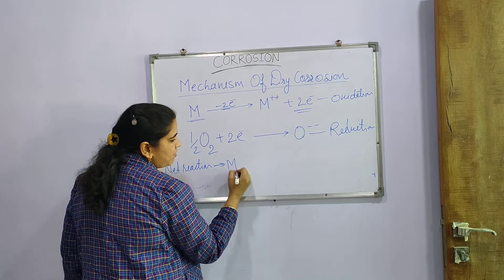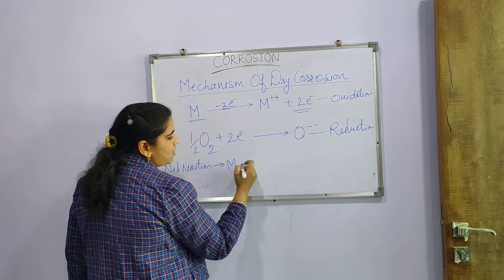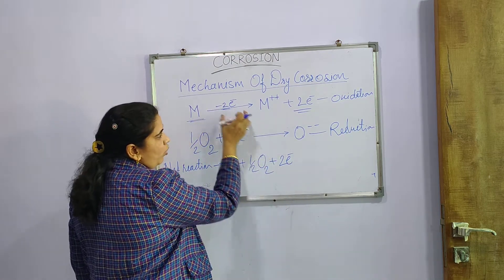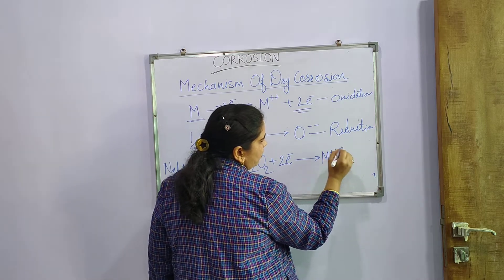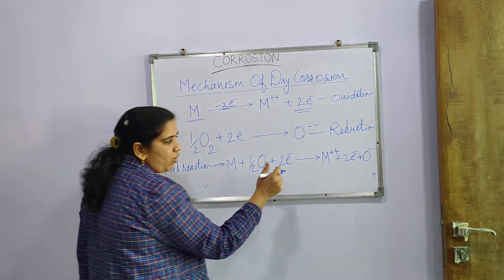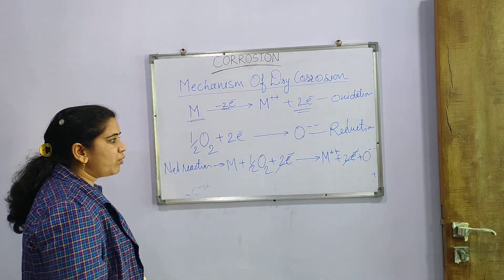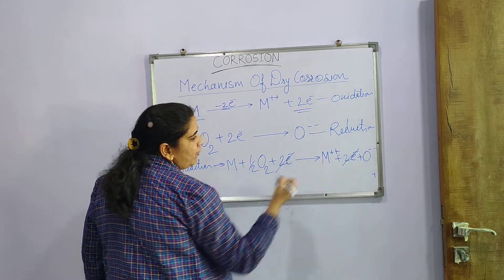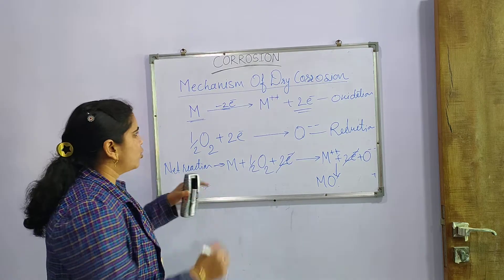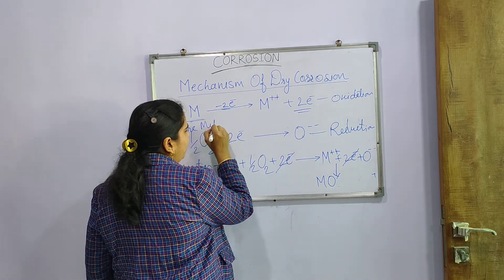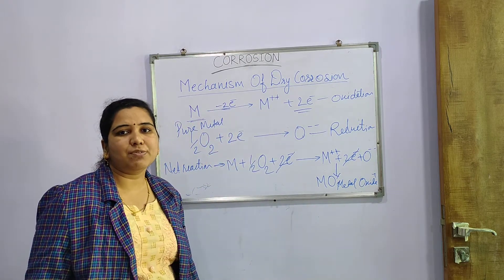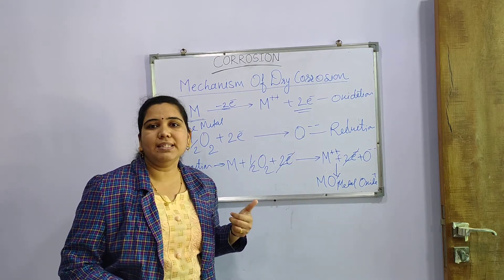The net reaction: on the left-hand side we write M plus half O₂ plus the two electrons; on the right-hand side M²⁺ plus two electrons plus O²⁻. The electrons cancel from both sides, giving: M + ½O₂ → M²⁺ + O²⁻, which ultimately gives MO — the metal oxide. So pure metal is converted into metal oxide. This is the mechanism of dry corrosion.